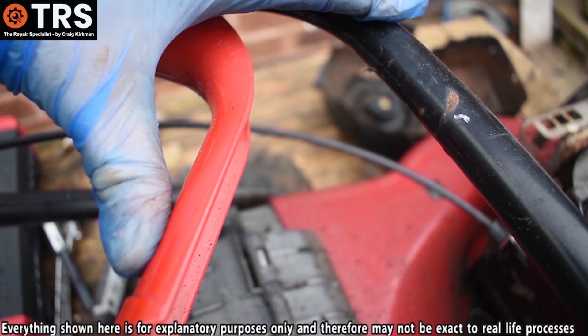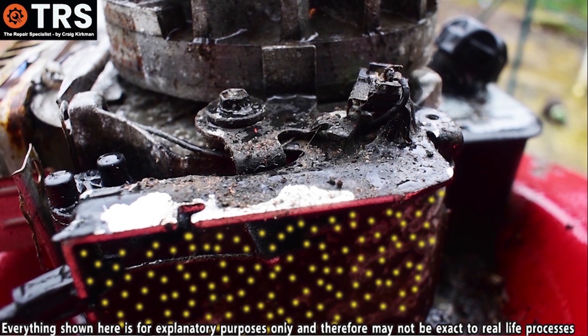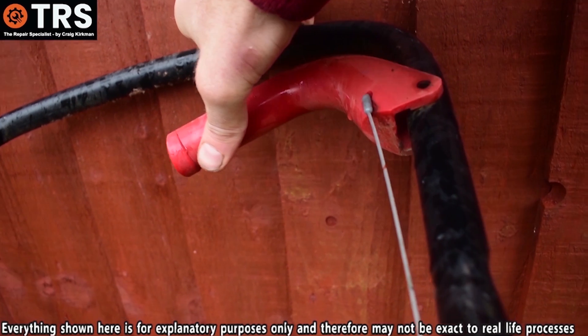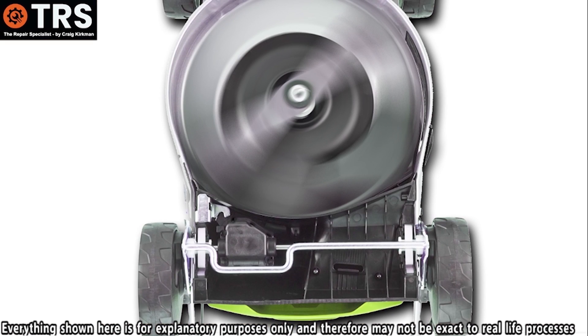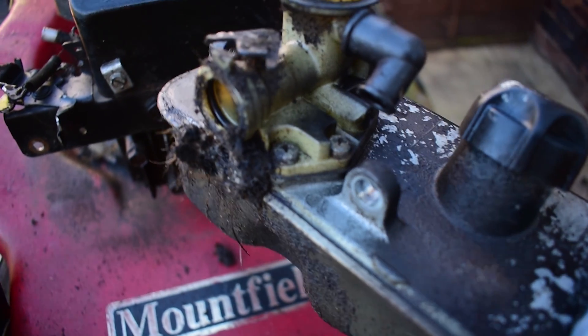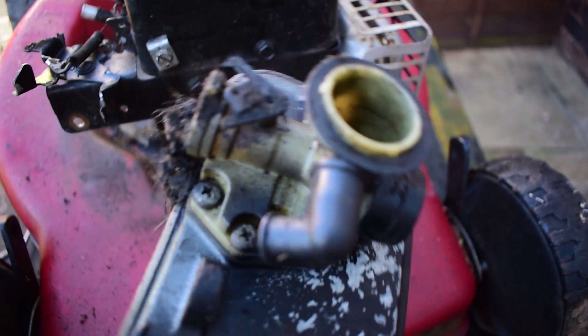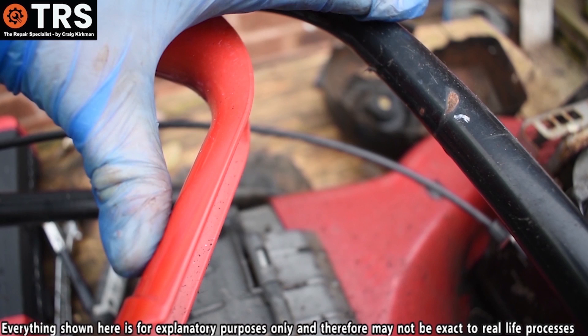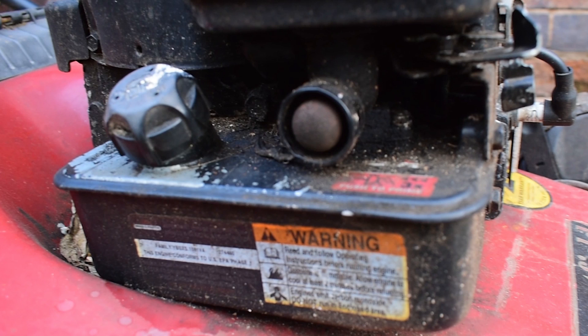Two things happen simultaneously when the operator releases the OPC lever. Firstly, as we've seen, the electrons go straight to ground and cut off the spark. At the same time, the special brake pad contacts the flywheel and stops the engine from rotating. So when this is let go, it's the safety mechanism to stop the engine and the blade instantly. If you'd like to see a video on some engine failures and diagnosis associated with these engines and this particular stop system, then I do have some videos on this and I'll leave them in the link below in the description.